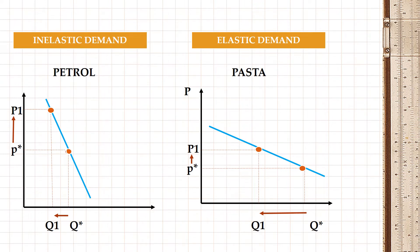Coming to the case of elastic demand, we are analyzing the market of pastas. With respect to Pakistan, pastas are not considered a necessity good — we generally regard wheat and bread as necessity goods. Demand is said to be elastic if quantity demanded is sensitive to changes in price level. Even if prices rise a little bit, quantity demanded will change a lot. The price has changed a little compared to the big change in quantity demanded, due to the nature of the commodity.